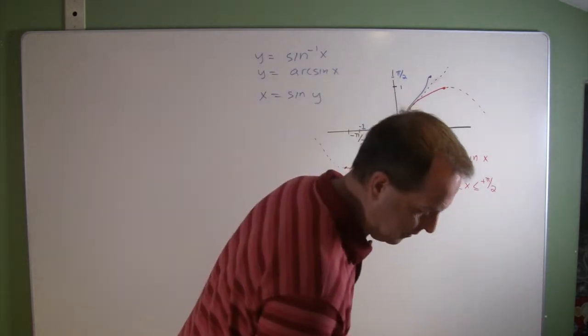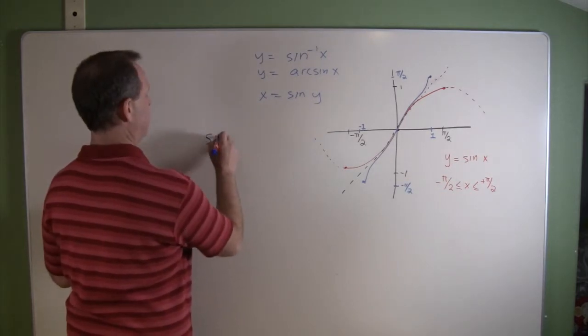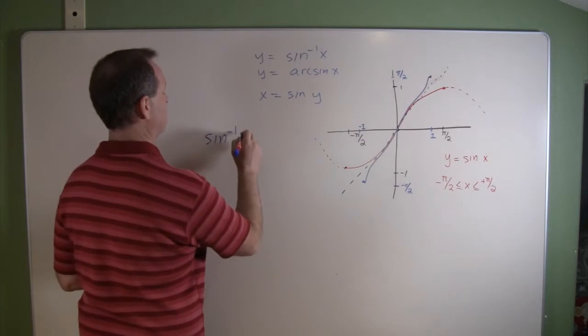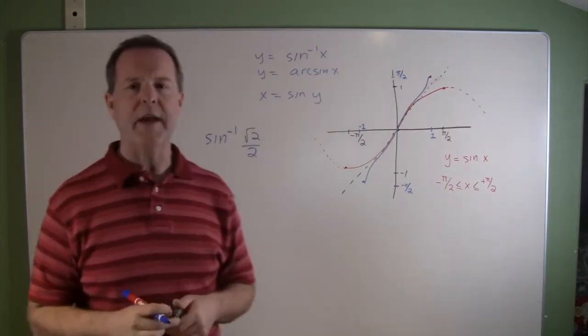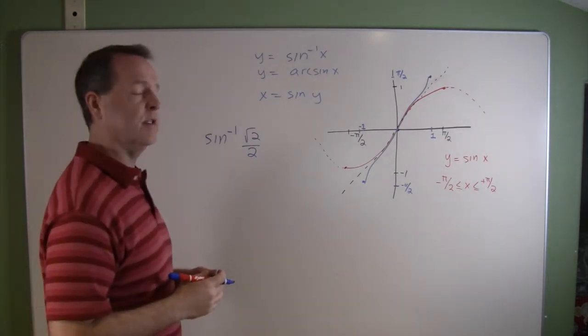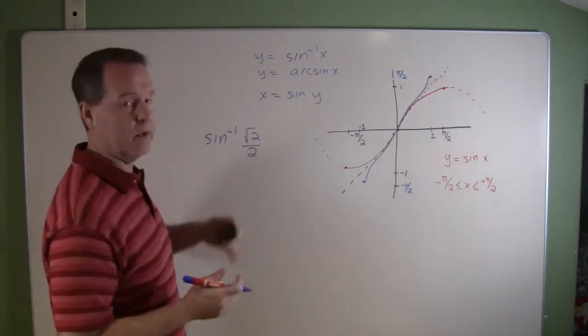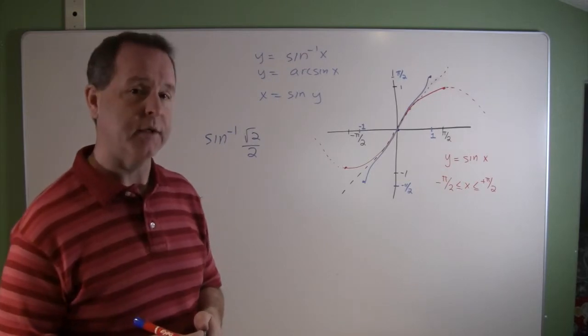So let's do an example that we have right here. I want to know the inverse sine of root 2 over 2. How would I deal with that? How would I kind of think about that? So what we're looking for is what's the angle now that produces the result of root 2 over 2? Or whose angle becomes sine root 2 over 2?